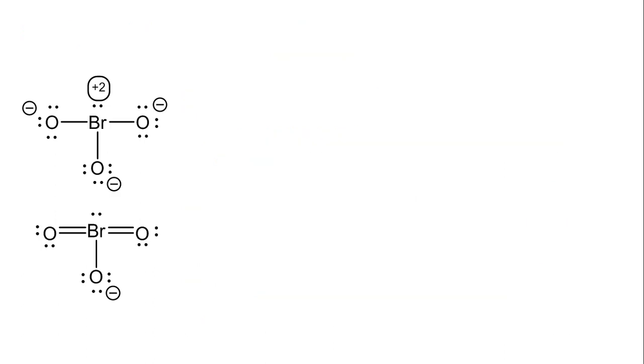We might ask, which is the correct structure? The first one obeys the octet rule, but has large formal charges. The second one has better formal charge distribution, but violates the octet rule. So, which is correct? The answer is probably neither.